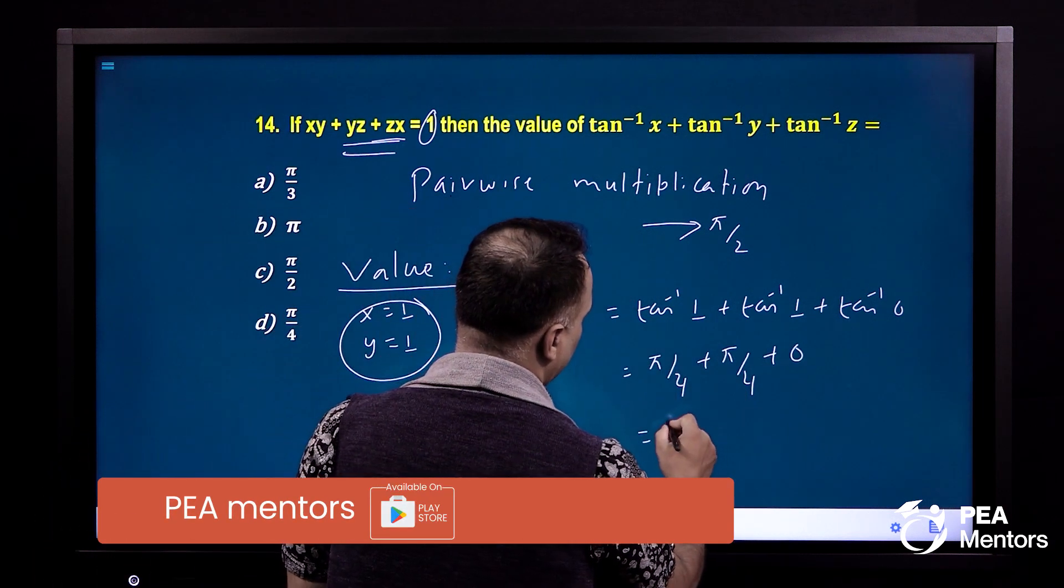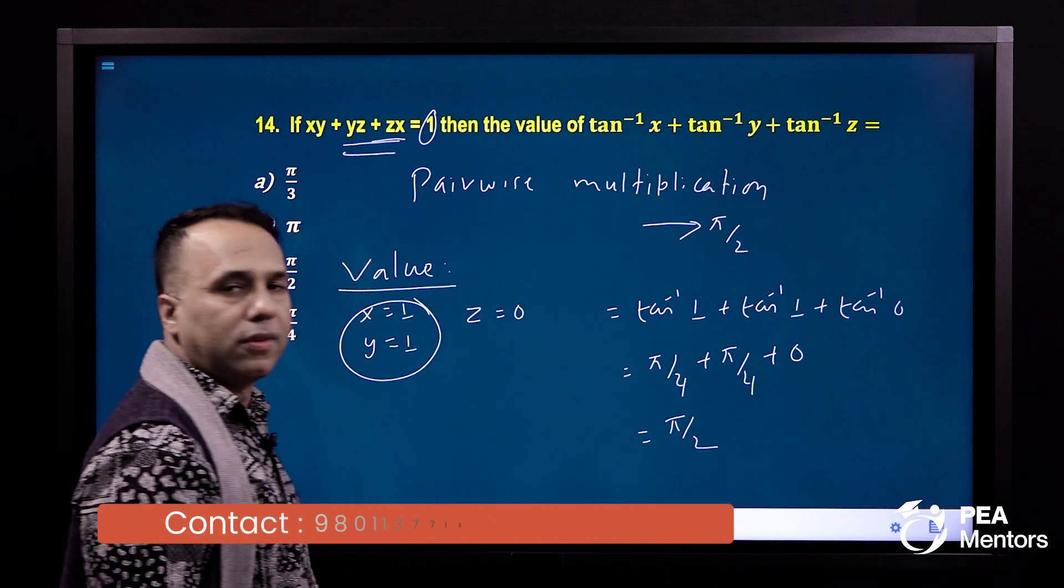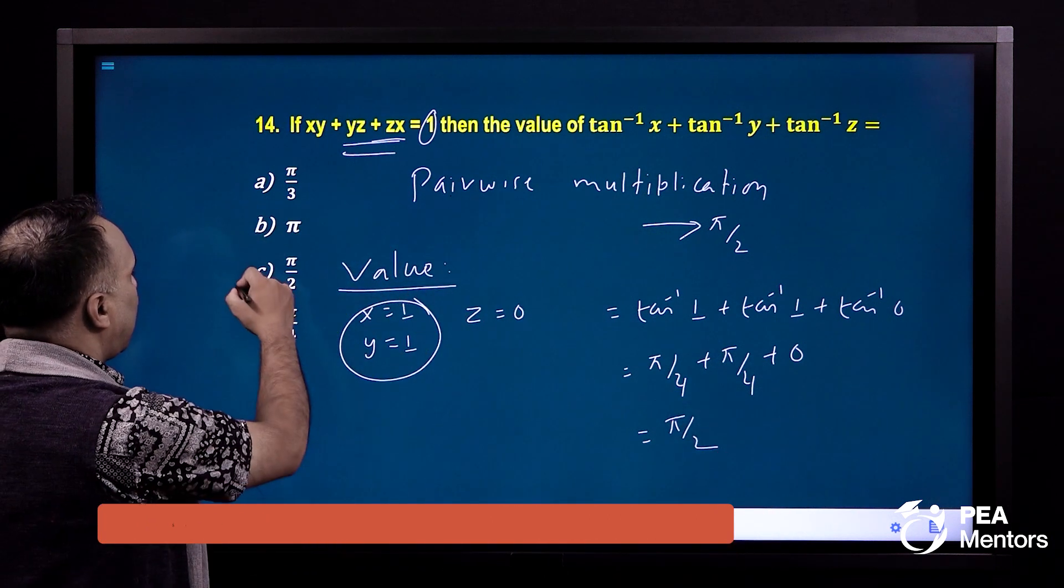Tan inverse 0 is 0. How do you do this? Pi by 2. It's your answer, pi by 2.